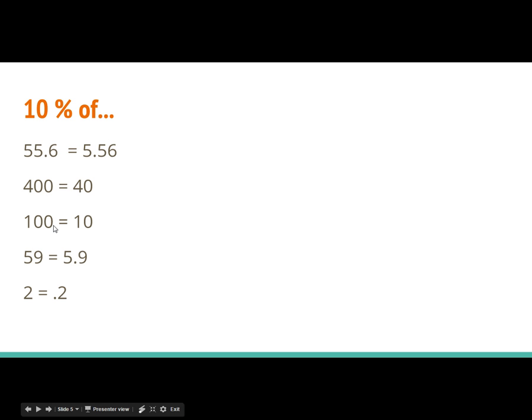10% of 100. Move my decimal spot one over, gives me 10. 10% of 59. Here's my imaginary decimal point at the end of the 9. I move it one over, gives me 5.9. And now 10% of 2. Move my decimal point over 1, gives me .2.